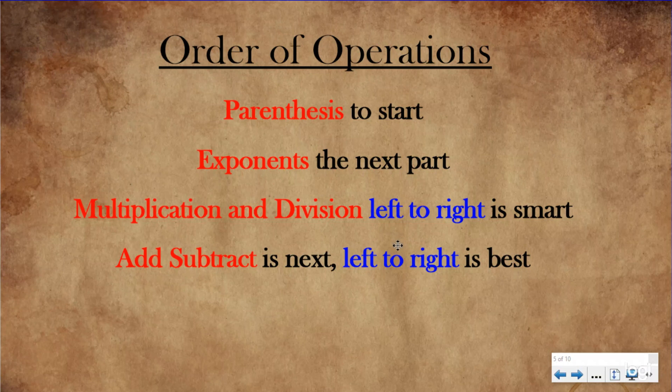After that, addition and subtraction are on the same line. Again, those are fact families — they are equal to each other, which means you go from left to right. You don't do addition first or subtraction first. They're equal; you do them at the same time, doing whatever comes first, left to right.